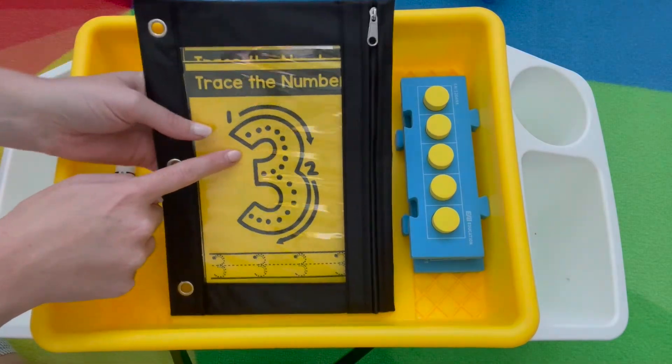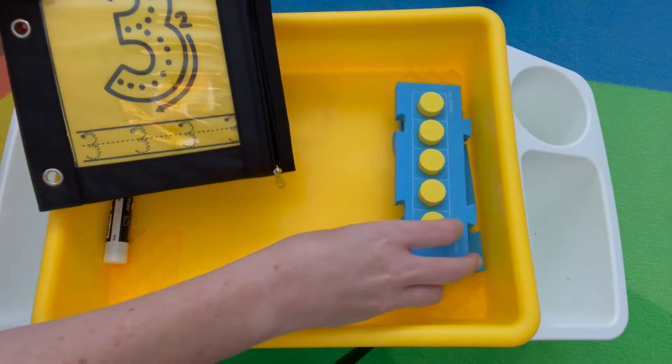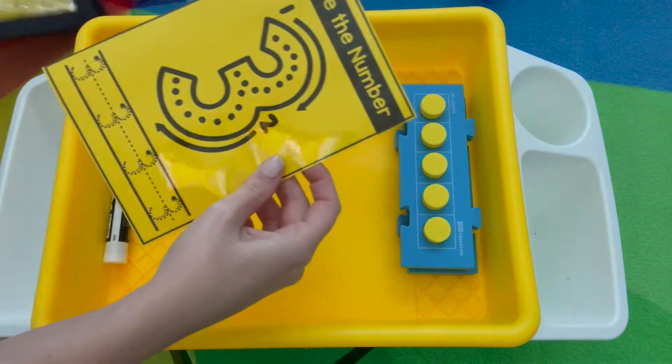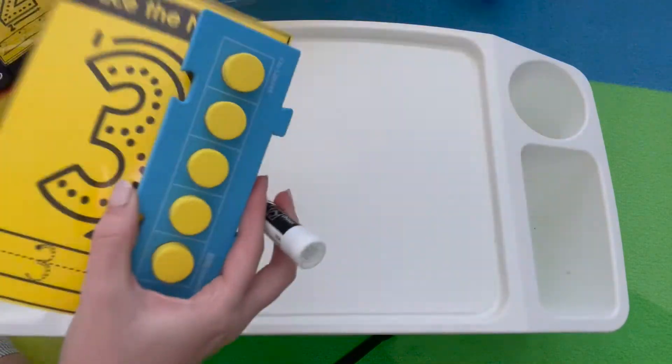For this activity they'll be tracing their numbers and then I also have five frames so they can build it. So let me pull out one of the tracing number cards, five frame, and dry erase marker so I can show you how to play.